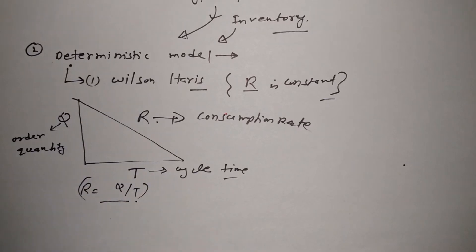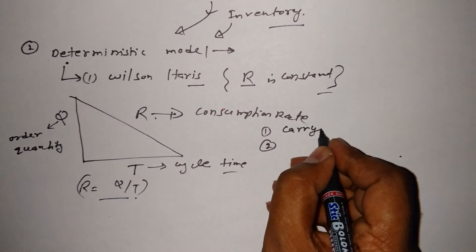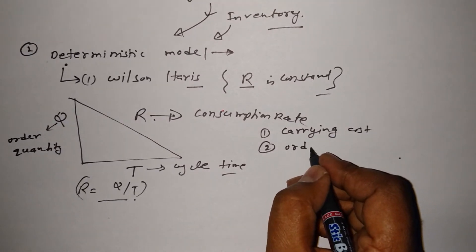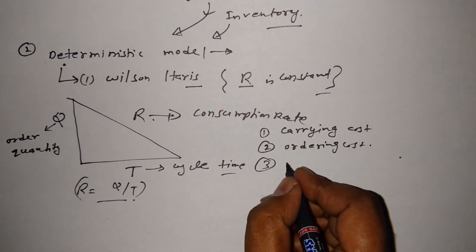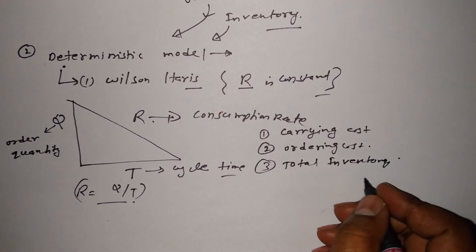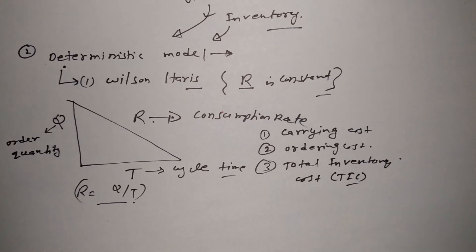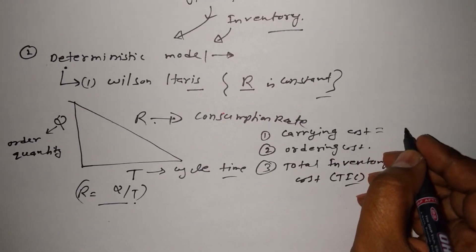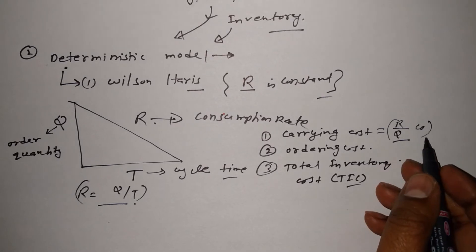There are two more important components: carrying cost and ordering cost. The total inventory cost — known in short as TIC — is also key. The formula for ordering cost is R/Q × C₀, and the formula for carrying cost is (1/2)Q × CC.